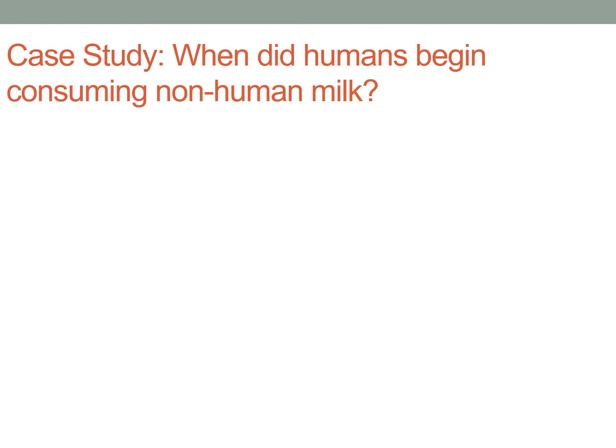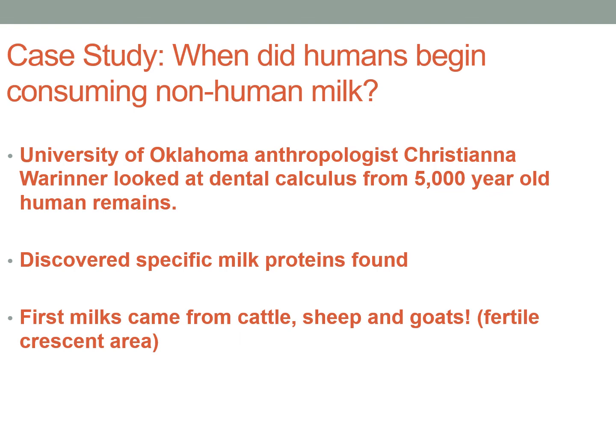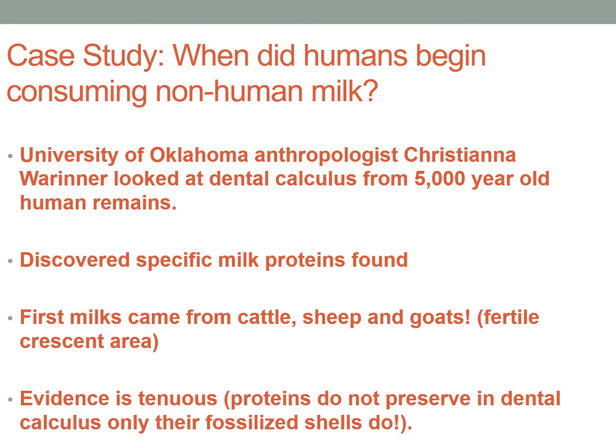Another case study looks at when our species began consuming non-human milk — quite unique, as it's uncommon for animals to drink another animal's milk. University of Oklahoma anthropologist Christiana Warner examined dental calculus from 5,000-year-old human remains from the Middle East and discovered specific milk proteins, suggesting the first milks came from cattle, sheep, and goats in the Fertile Crescent. However, the evidence is tenuous — proteins themselves do not preserve in dental calculus, only their fossilized shells do, and those shells are often fragmentary.